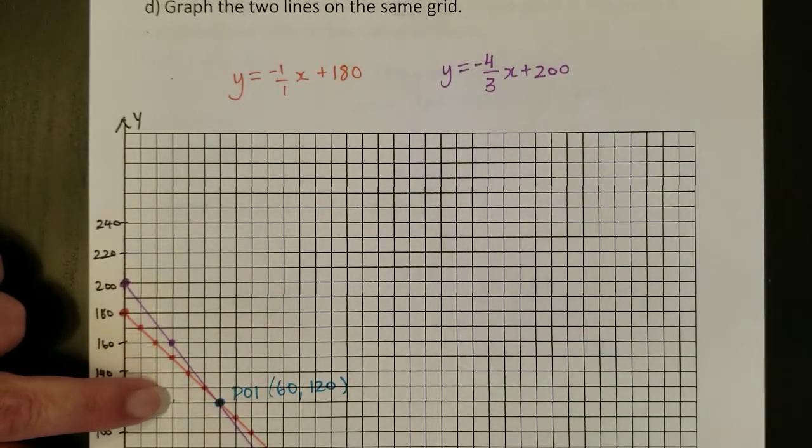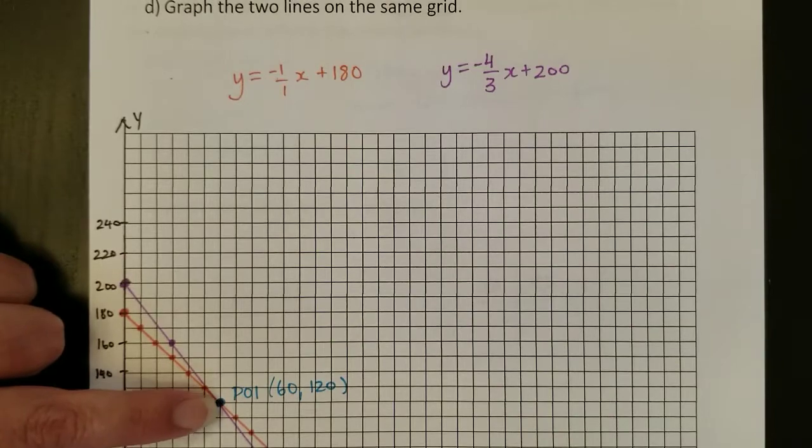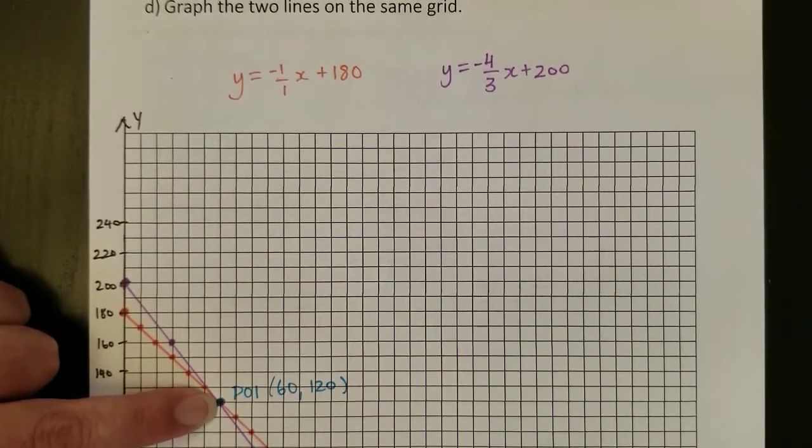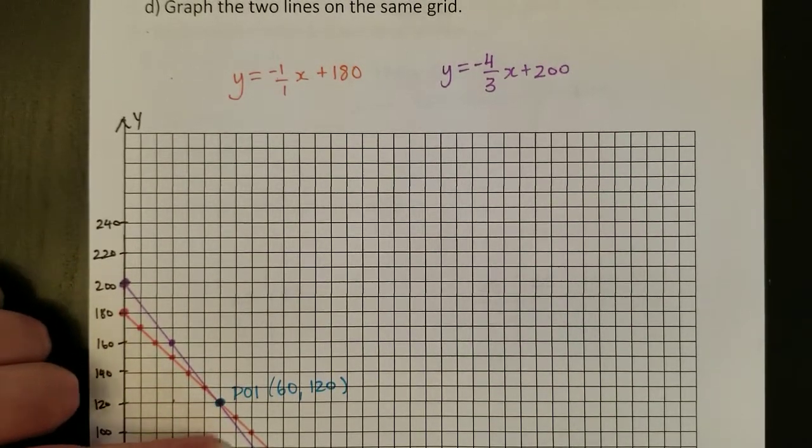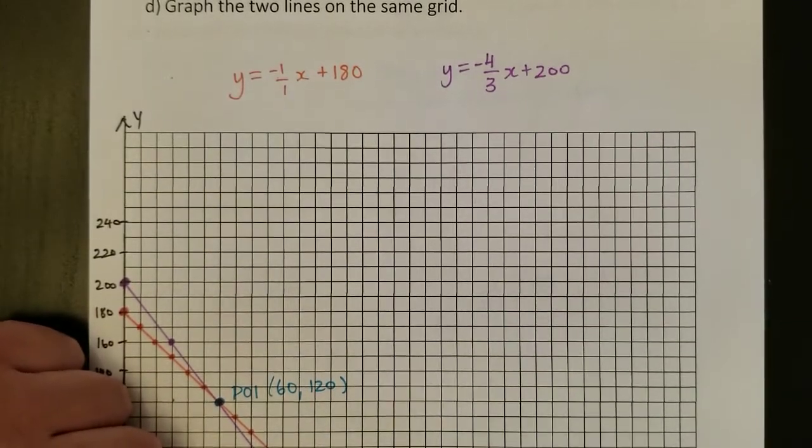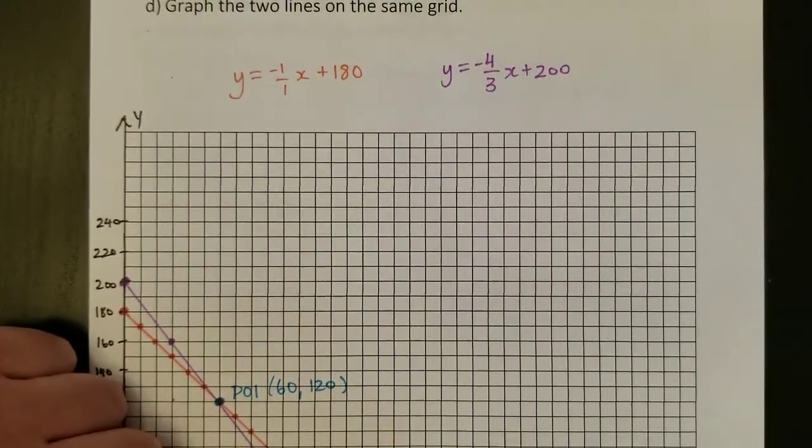I would do that again, 1, 2, 3, 4 squares down and 1, 2, 3 over and put another dot. We can see already that that's going to be the POI. But I did a couple more points, 4 down, 3 over, just to make sure I was graphing really accurately there.